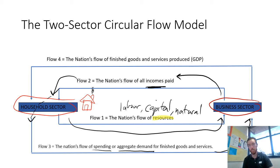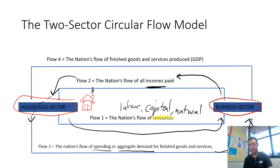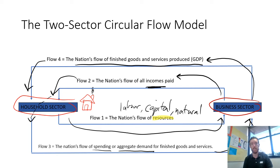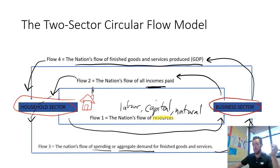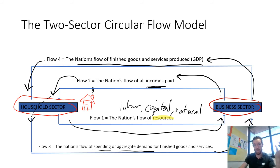The business sector then determines the total amount of demand for goods and services, and if you're in the business sector and see that level of demand, you'll produce exactly that much to maximise sales and ensure there's no excess stock. This leads to the nation's flow of finished goods and services produced — GDP, or gross domestic product. Those goods and services are then distributed to households, we consume them, and the cycle continues: businesses need resources, they pay for those resources, we spend that income on goods and services, businesses produce those goods, and it loops around endlessly.